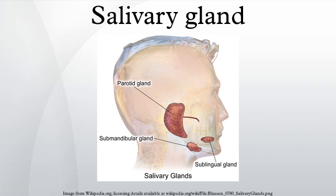Other species: The salivary glands of some species are modified to produce enzymes. Salivary amylase is found in many, but by no means all, bird and mammal species. Furthermore, the venom glands of poisonous snakes, Gila monsters, and some shrews are modified salivary glands. In other organisms such as insects, salivary glands are often used to produce biologically important proteins like silk or glues, and fly salivary glands contain polytene chromosomes that have been useful in genetic research.